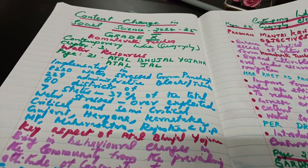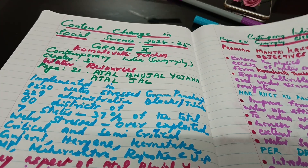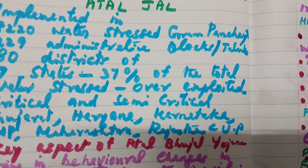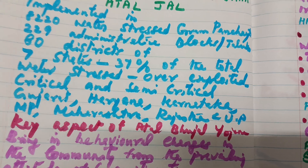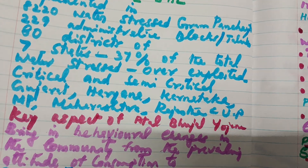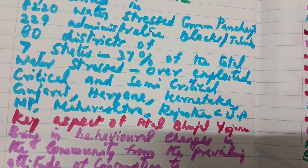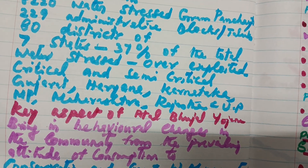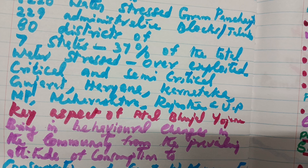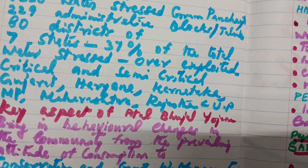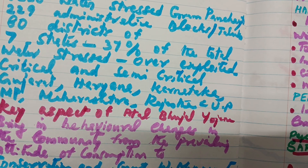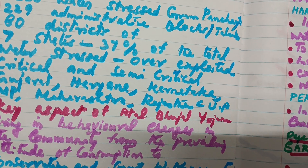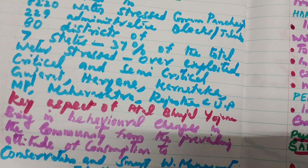The 7 states are: Gujarat, Haryana, Karnataka, Madhya Pradesh, Maharashtra, Rajasthan, and Uttar Pradesh.